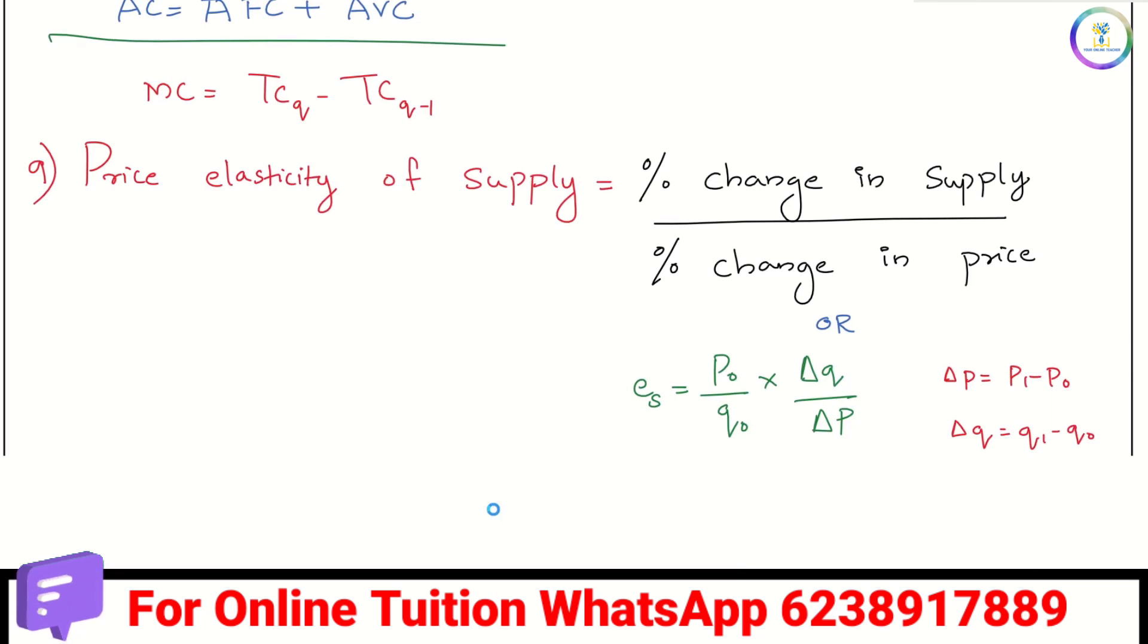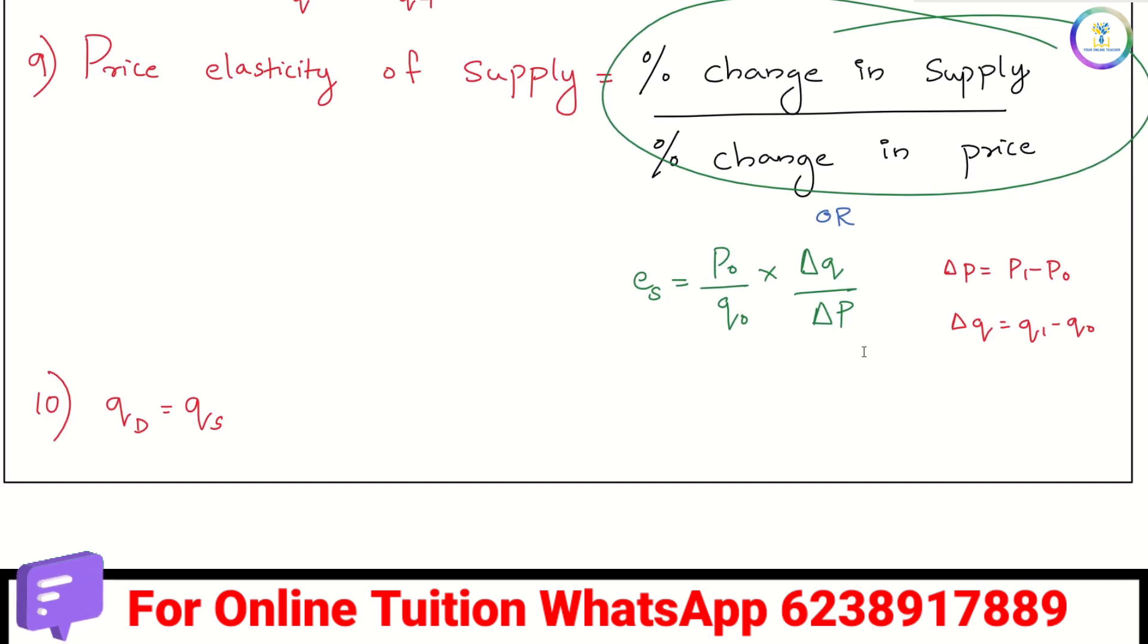The next one, price elasticity of supply is also important. Percentage change in supply divided by percentage change in price. That is P0 by Q0 into delta Q by delta P. Delta P is P1 minus P0, delta Q is Q1 minus Q0.